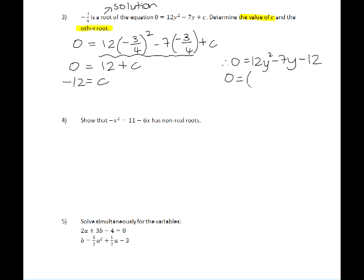We know that one of the solutions was negative 3 quarters, because they told us that in the very beginning. So one of these brackets needs to give us negative 3 quarters when we solve it, which means it must be 4y plus 3. Because if you equate 4y plus 3 to 0, you get 4y is equal to negative 3, and you divide both sides by 4, you get y is negative 3 quarters.